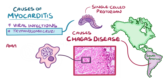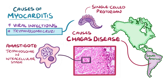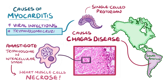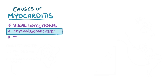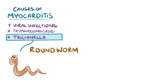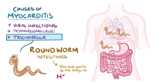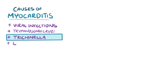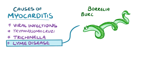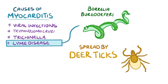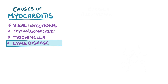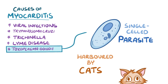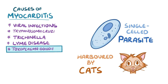In Chagas disease, under a microscope it's possible to see groups of amastigotes within the heart muscle cells — trypanosomes in the intracellular stage — causing the heart muscle cells to necrose and die. There's also Trichinella, a roundworm that moves from the intestines into various parts of the body, causing myocarditis. Myocarditis can also be seen in Lyme disease, caused by the bacteria Borrelia burgdorferi, spread by deer ticks.